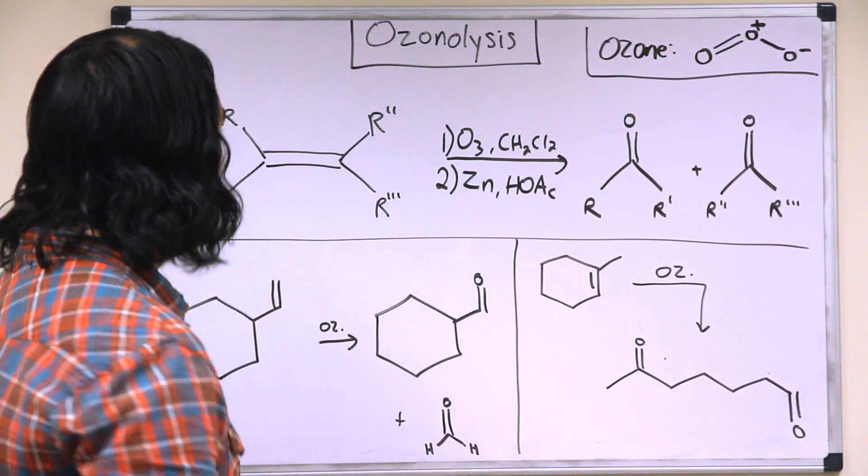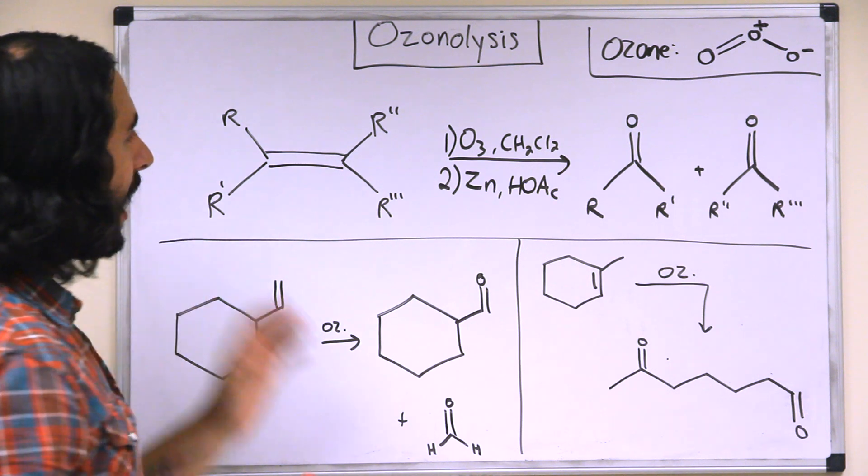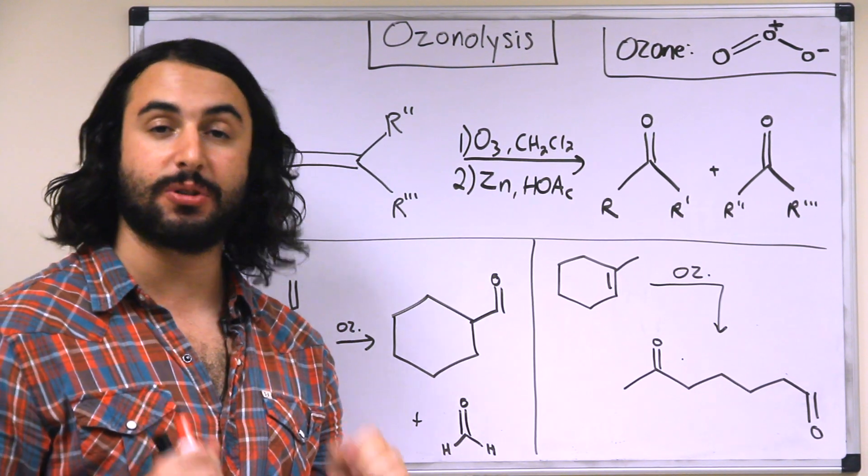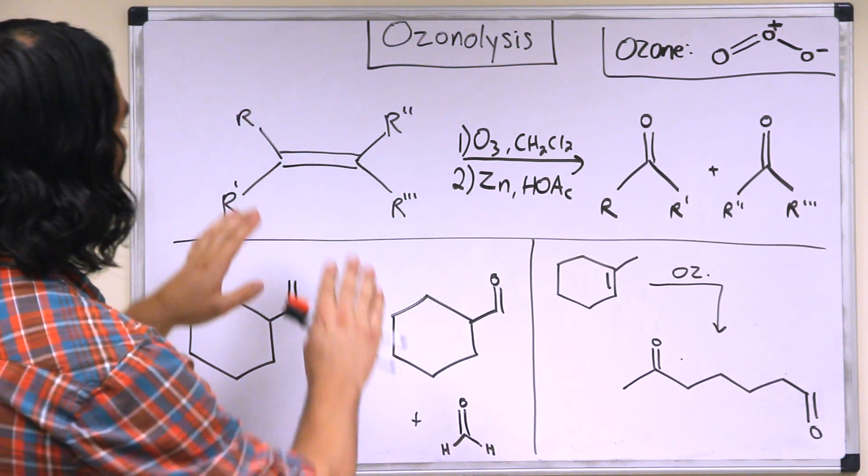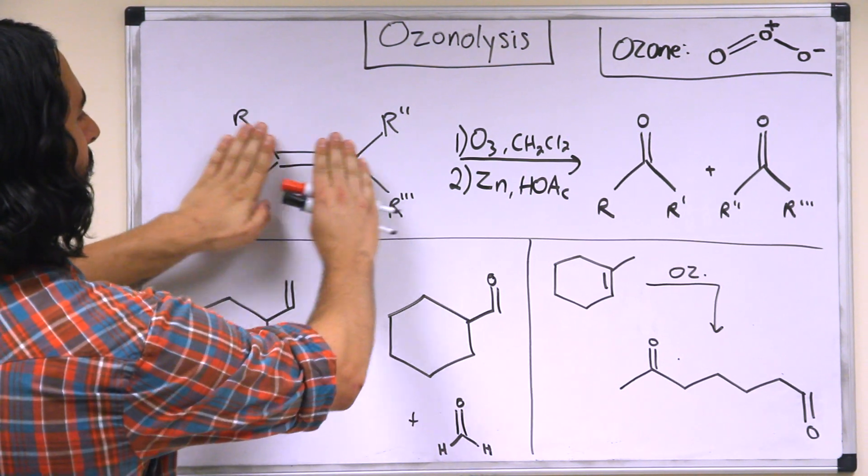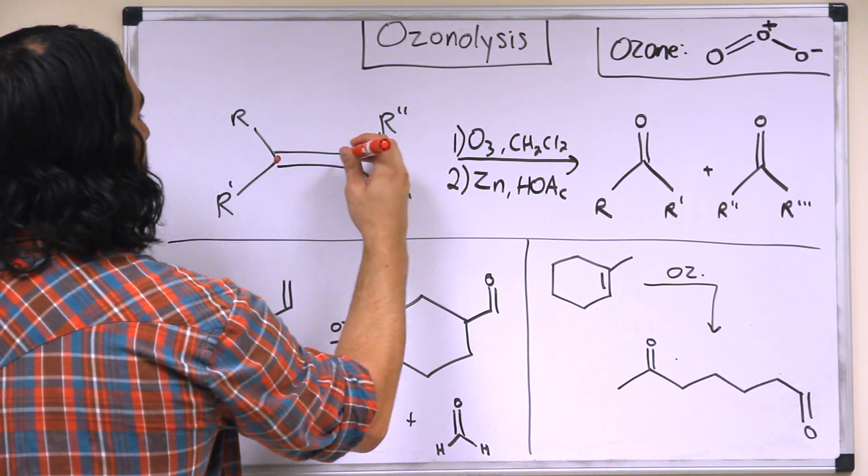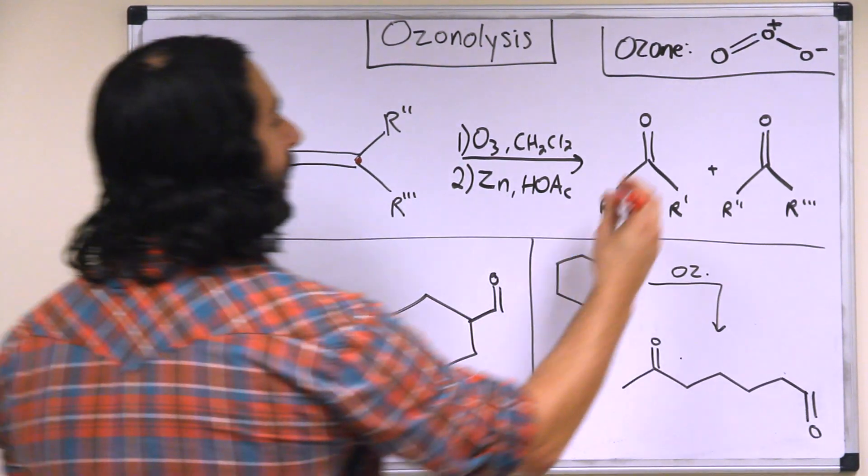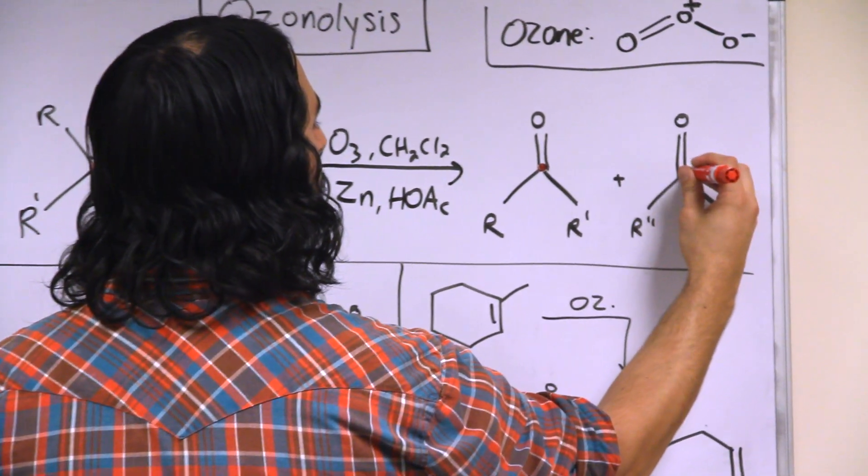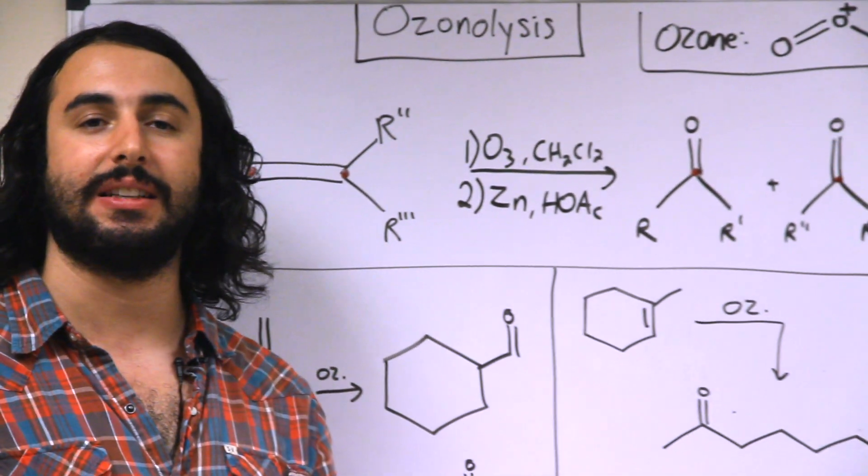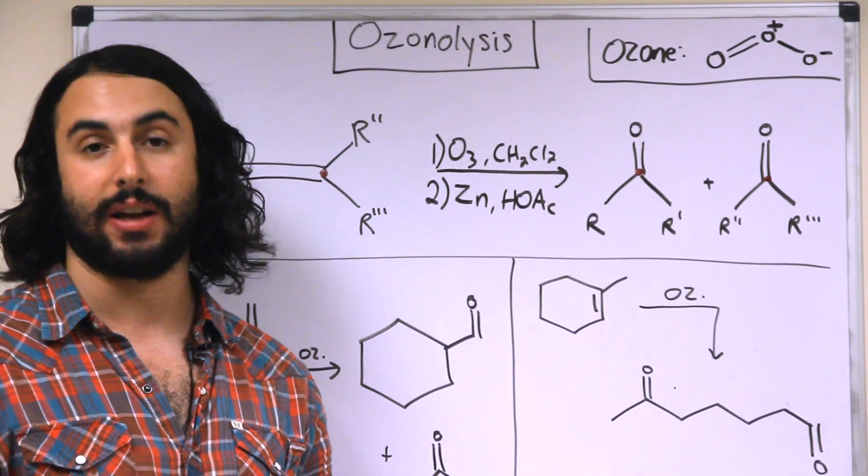Ozonolysis utilizes an alkene substrate, and what happens is that this double bond gets cleaved and pulled apart, and each of the carbons that was participating in this double bond is now a carbonyl. So this is useful for transforming alkenes into ketones and aldehydes.